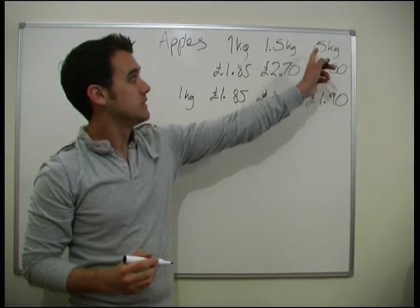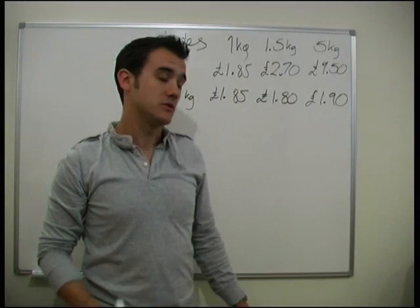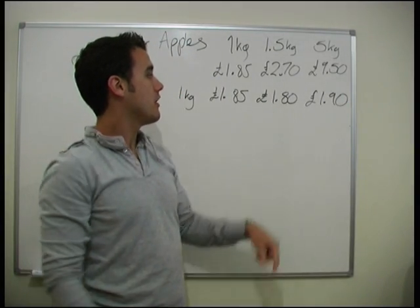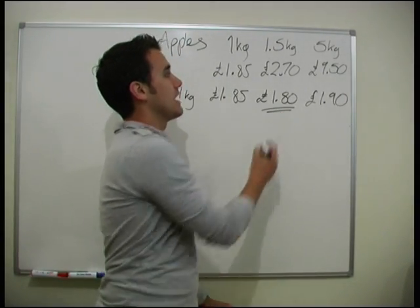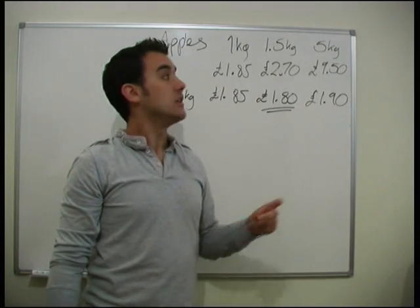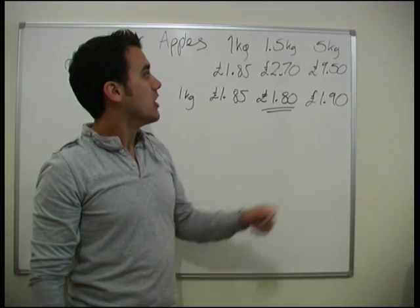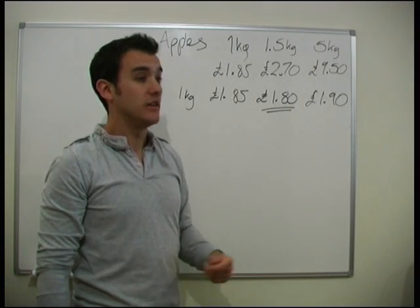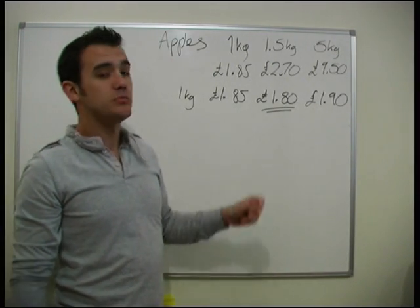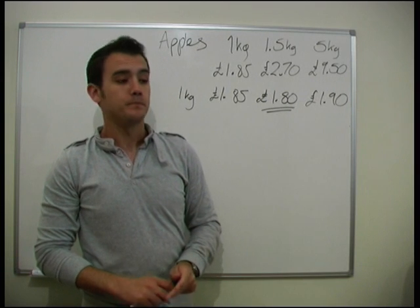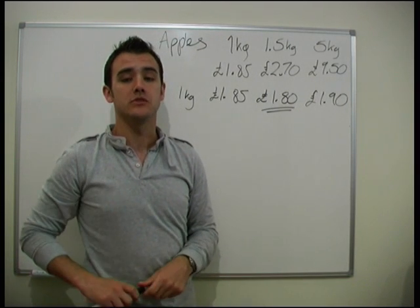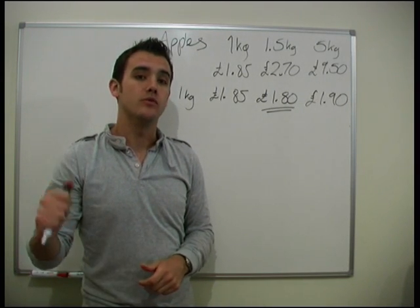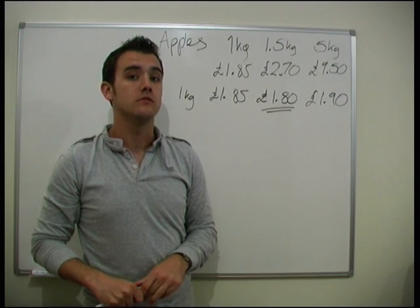So in this case we actually find the 5kg bag to be the most expensive, and we find the 1.5kg bag is the best value. So we would actually be better off buying 3 of those to get 4.5kg rather than we would buying the 5kg bag if we wanted that many apples. And this is pretty helpful when you are out in the supermarket. So have a practice of some of these questions in your book and then we will finish off ratios when you are done with it.